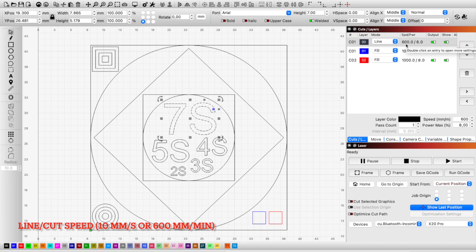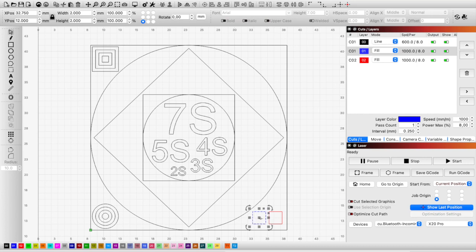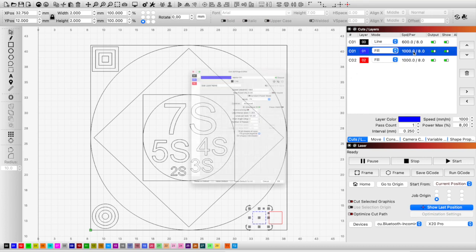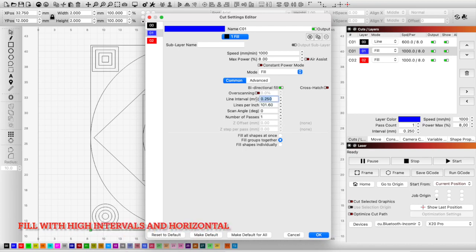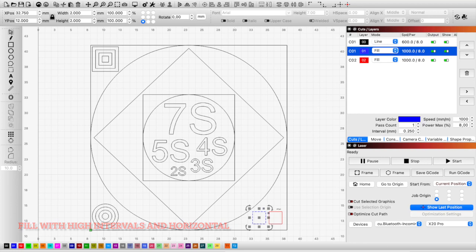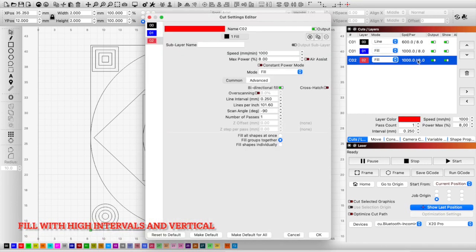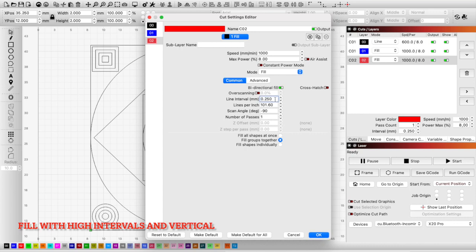There are two squares to check the horizontal and vertical fill lines. Select a high line interval value to be able to differentiate the lines after the burn. Set the scanning angle to zero for horizontal scan. I've used the same settings for the other fill square but 90 degrees for scanning angle to engrave vertical lines.